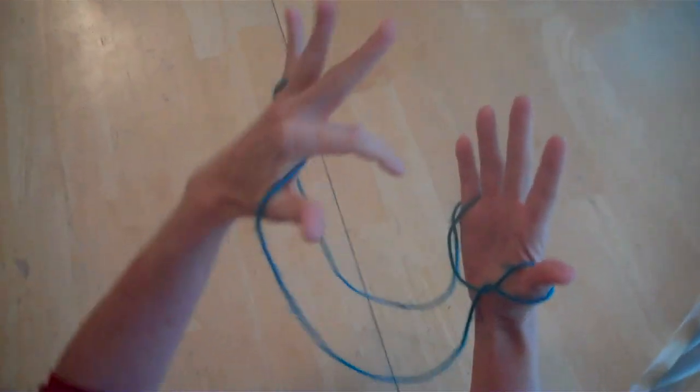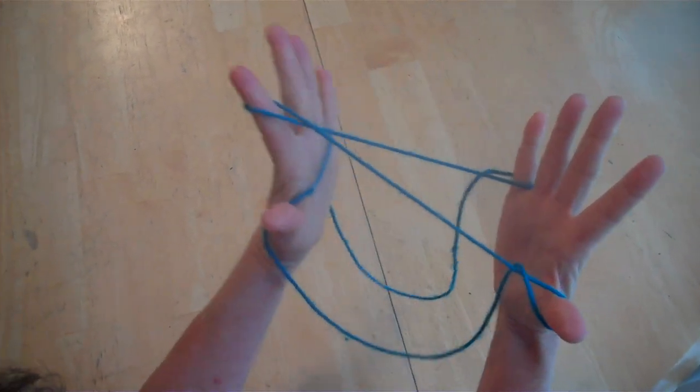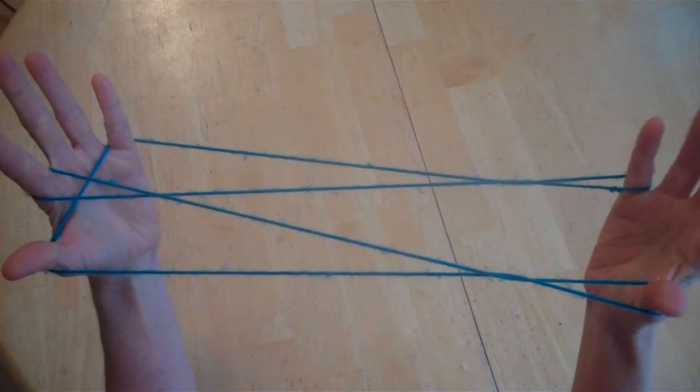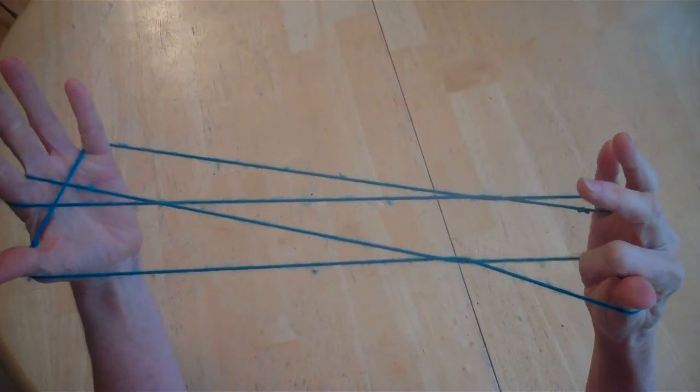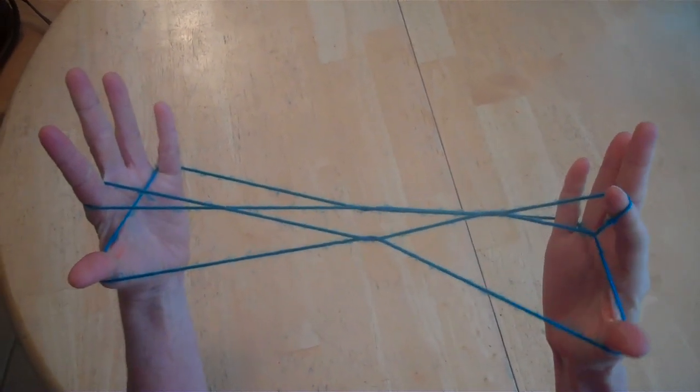Grab this palm string going down. Twist it towards you. Then we're going to grab the string on the pinky but we're going to do it going through the thumb. Raise that one up.